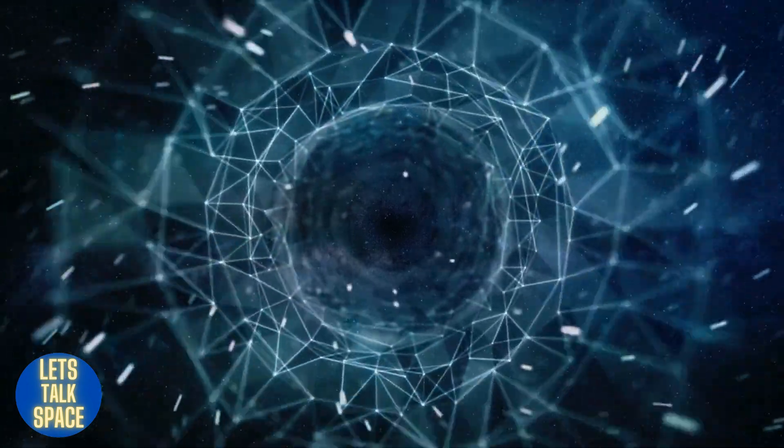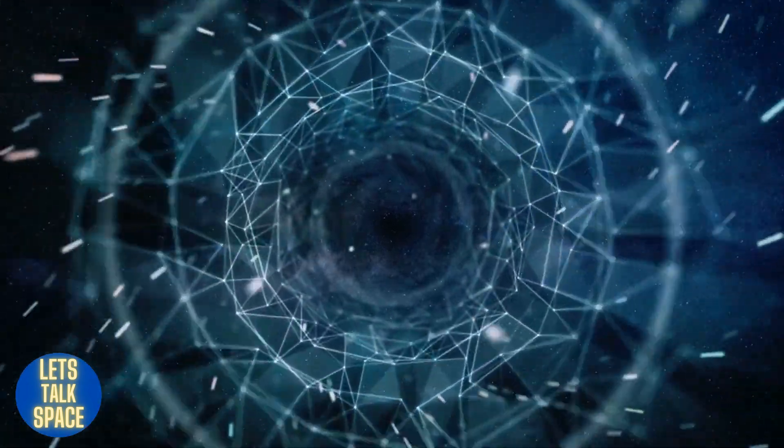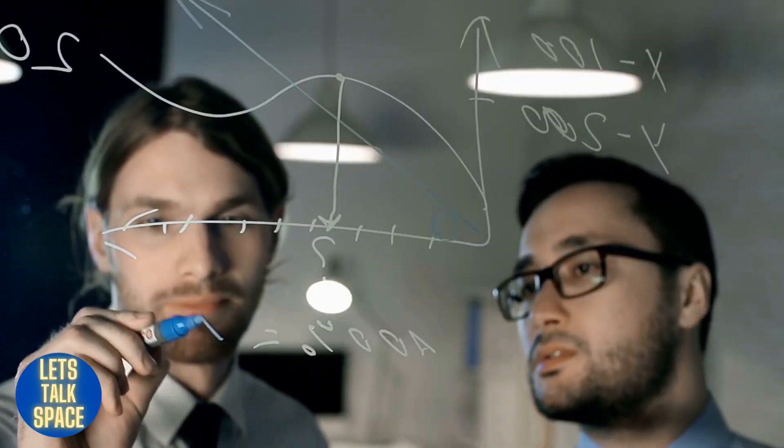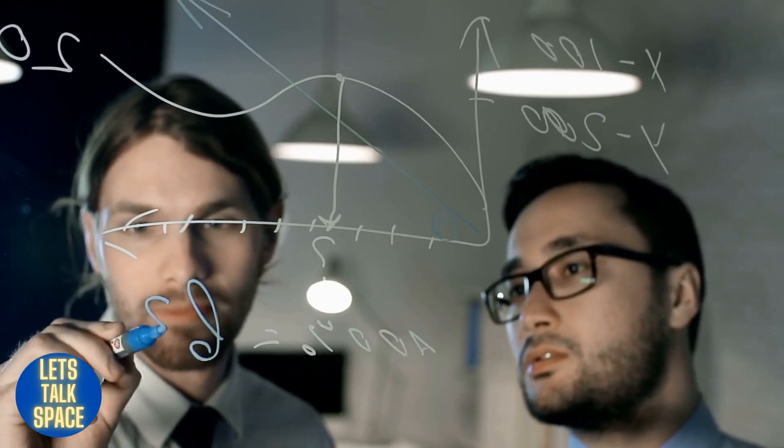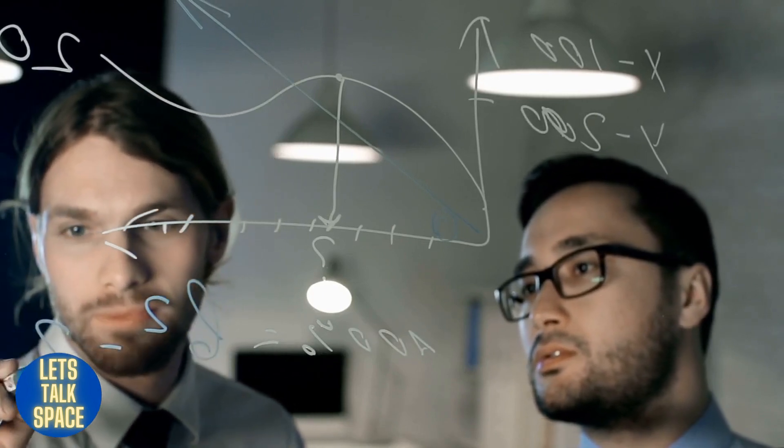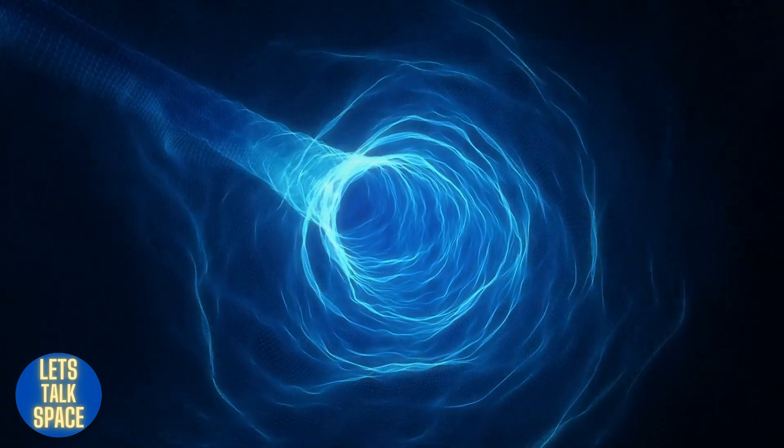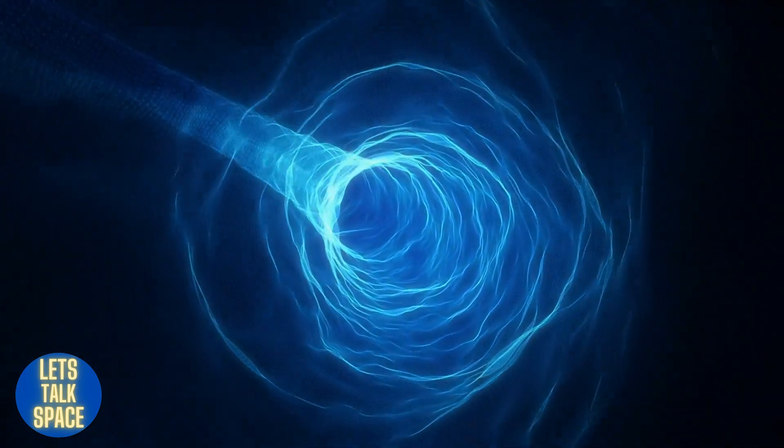Wormholes have been used as plot devices in science fiction. They are believed by many scientists to be unlikely, but theoretically possible if certain conditions are met. One such condition is that they would need to be exceptionally long and stable structures.